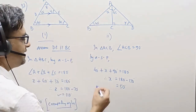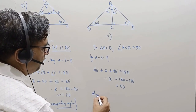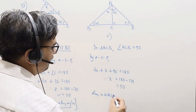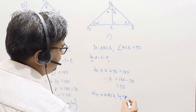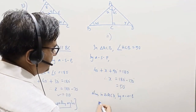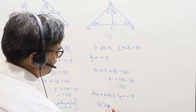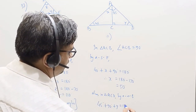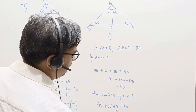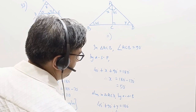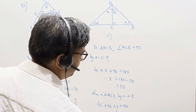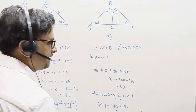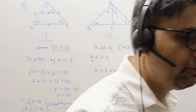Now in triangle ACD, by angle sum property again: 45 plus 90 plus y equals 180 degrees. Therefore angle y equals 180 minus 135, which is 45 degrees. So x equals 50 and y equals 45.